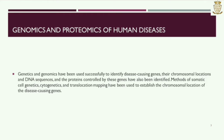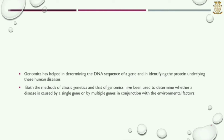Genomics and Proteomics of Human Diseases. Genetics and genomics have been used successfully to identify disease-causing genes, their chromosomal locations and DNA sequences, and the proteins controlled by these genes have also been identified. Methods of somatic cell genetics, cytogenetics and translocation mapping have been used to establish the chromosomal location of disease-causing genes. Genomics has helped in determining the DNA sequence of a gene and in identifying the protein underlying these human diseases. Both classic genetics and genomics have been used to determine whether a disease is caused by a single gene or by multiple genes in conjunction with environment and other factors.